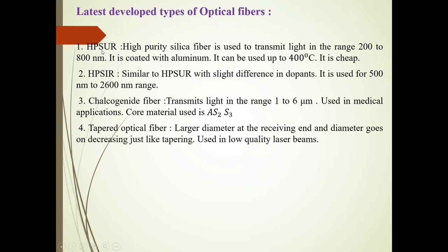First is HPSUR type of optical fiber. It is high purity silica fiber. It is used to transmit light in the range of 200 to 800 nanometers. It is coated with aluminum, and it can be used up to 400 degrees Celsius. Also, it is very cheap.